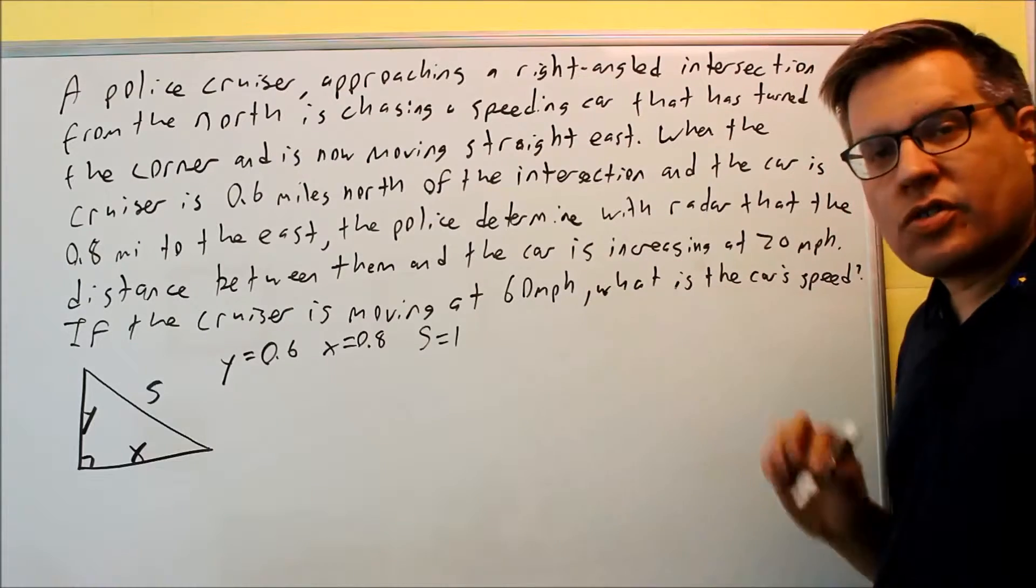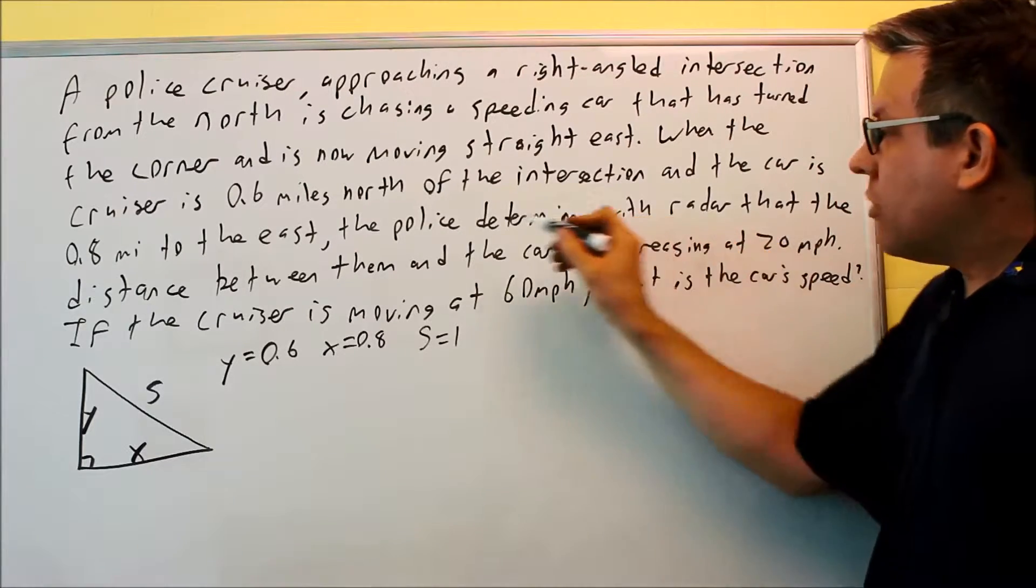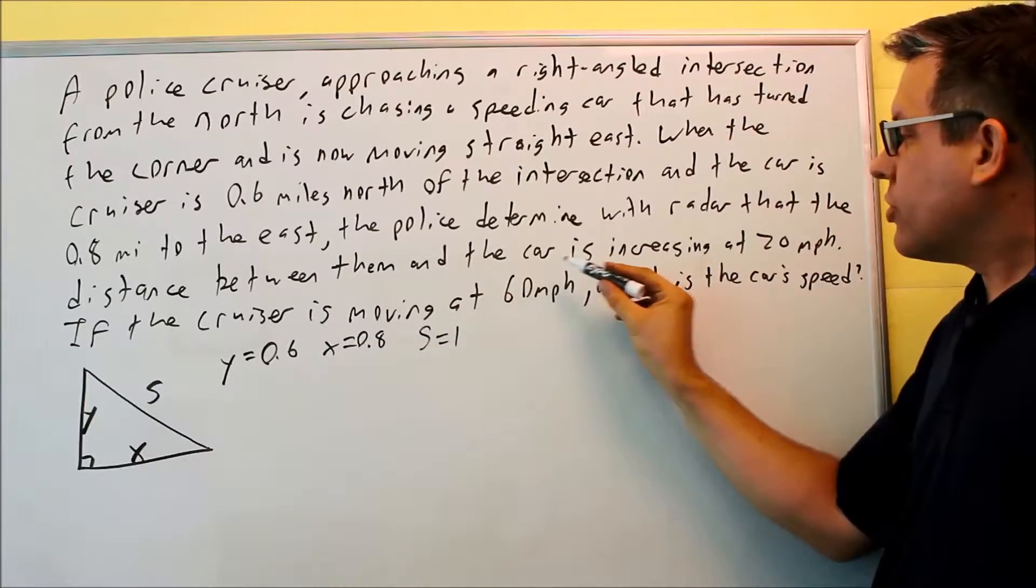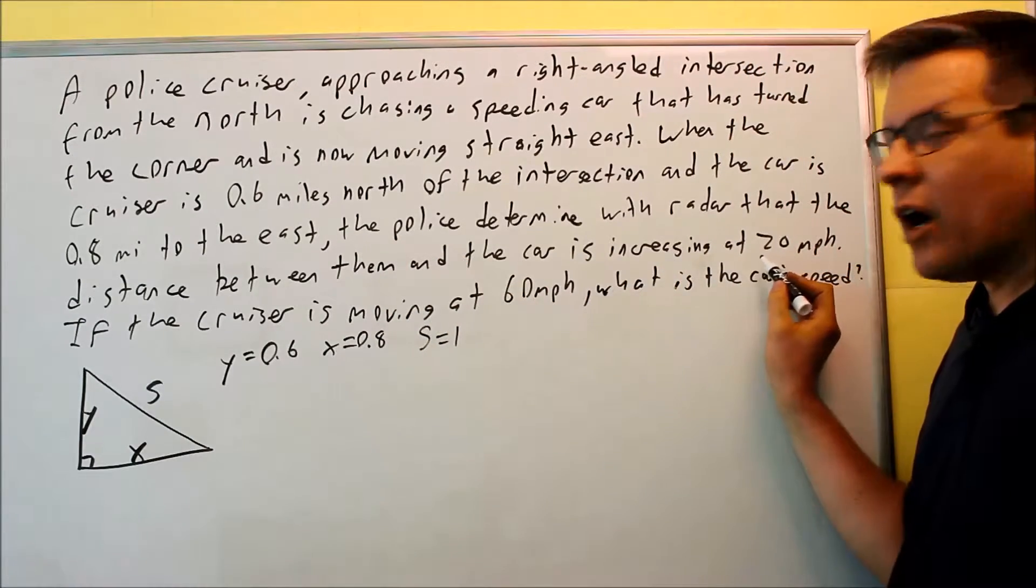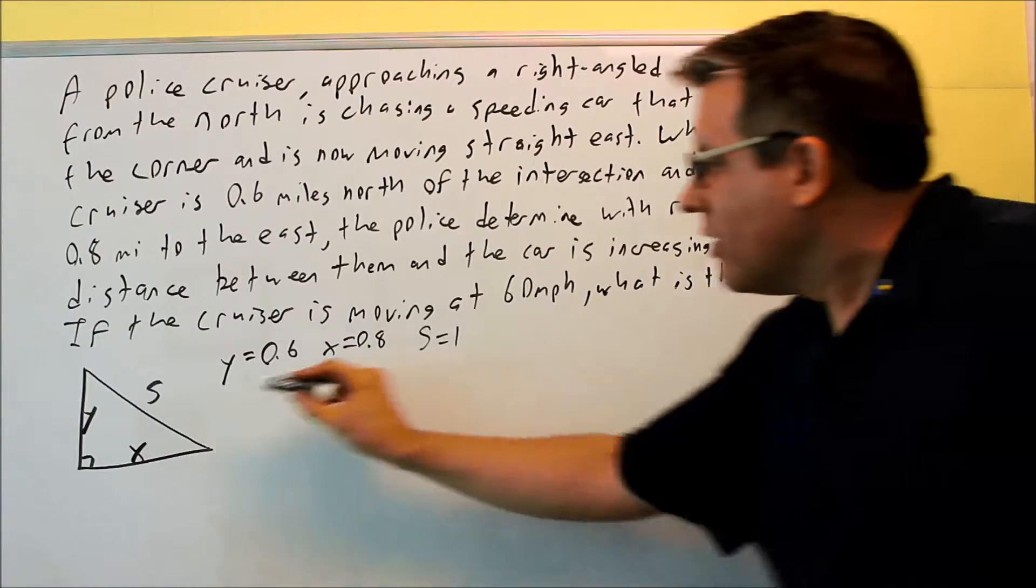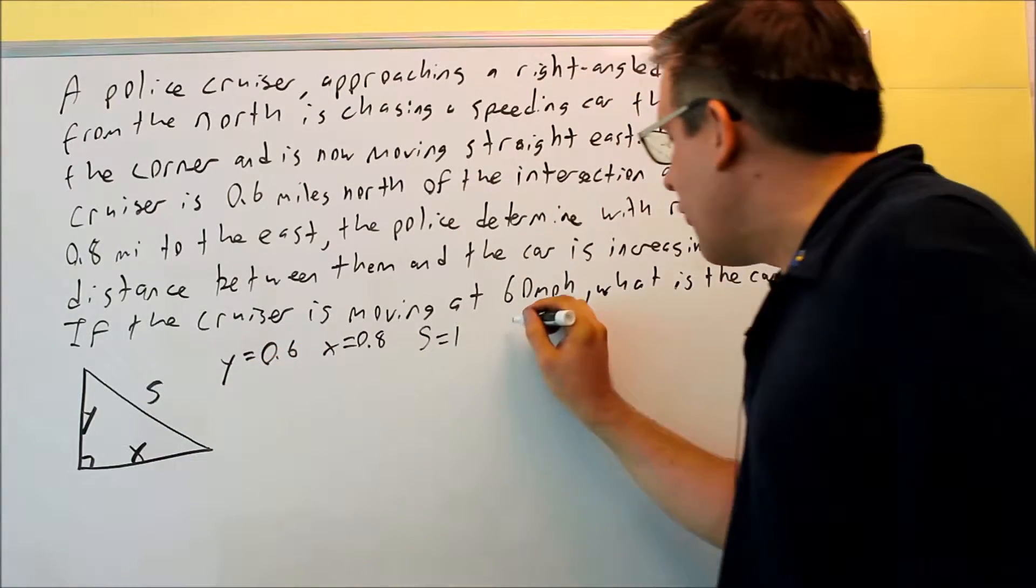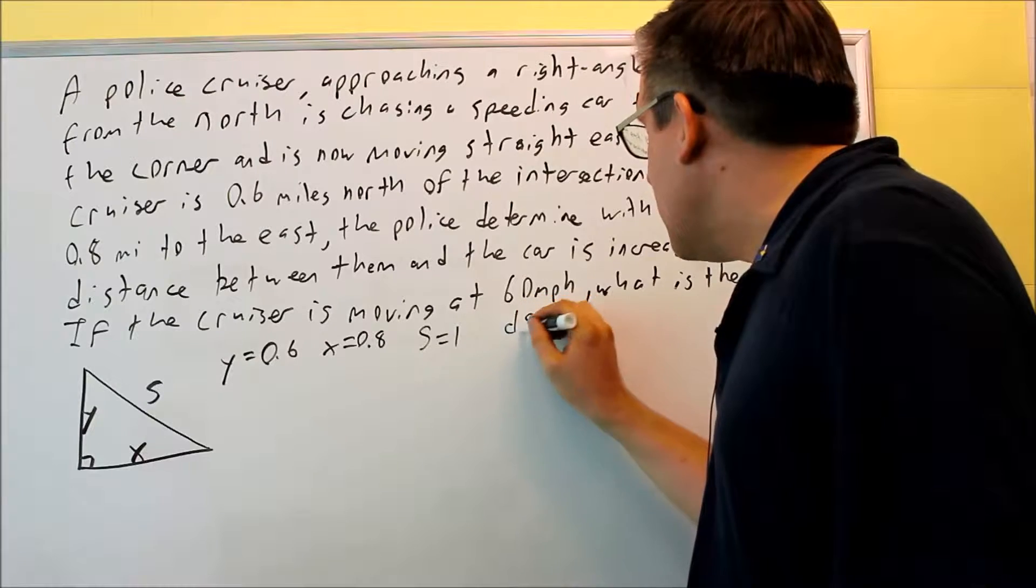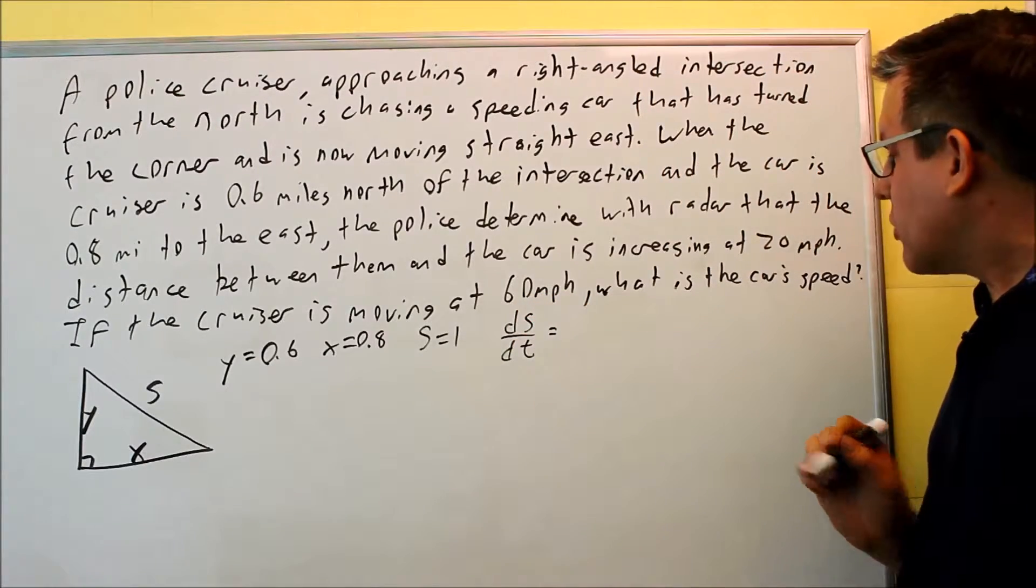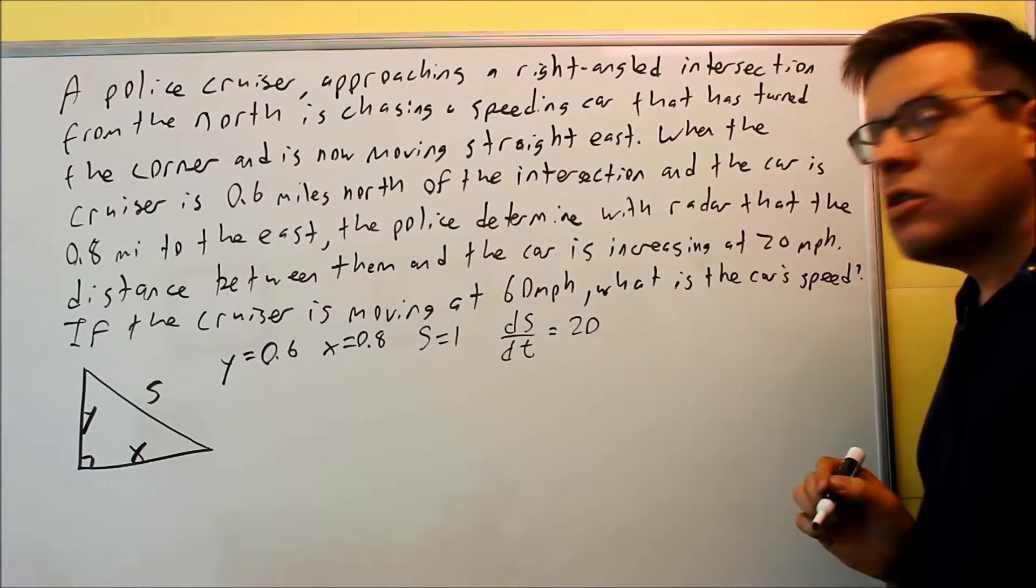Let's keep reading and see what else they give us. Police determine with radar the distance between them and the car is increasing at 20 miles per hour. The distance between them is increasing at 20 miles per hour. That involves the S. In fact, it's going to be DS/DT specifically is what they gave us here. And this is going to be 20.